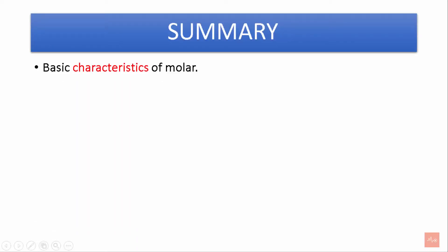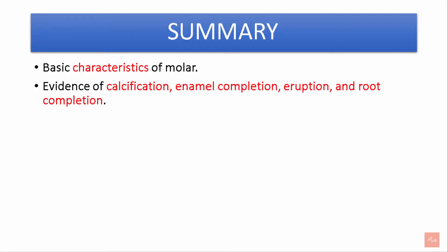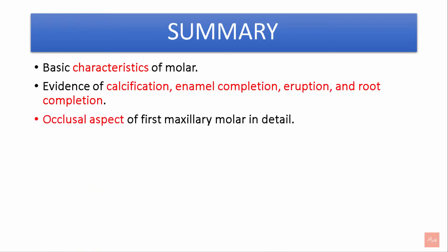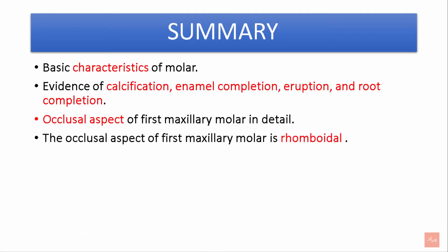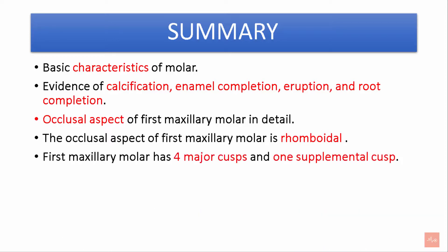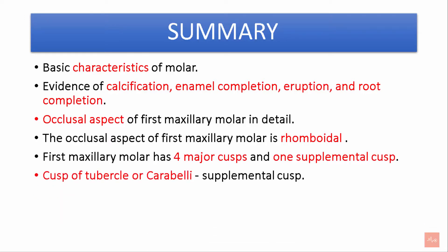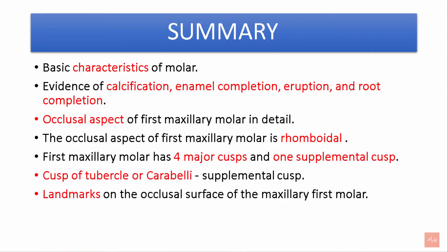In summary, today we learned the basic characteristics of the molar, the evidence of calcification, enamel completion, eruption, and root completion. We learned that the occlusal aspect of the first maxillary molar is rhomboidal in shape, that it has four major cusps and one supplemental cusp — the cusp of Carabelli. We also covered the landmarks on the occlusal surface: fossa, ridge, pit, and grooves in detail.